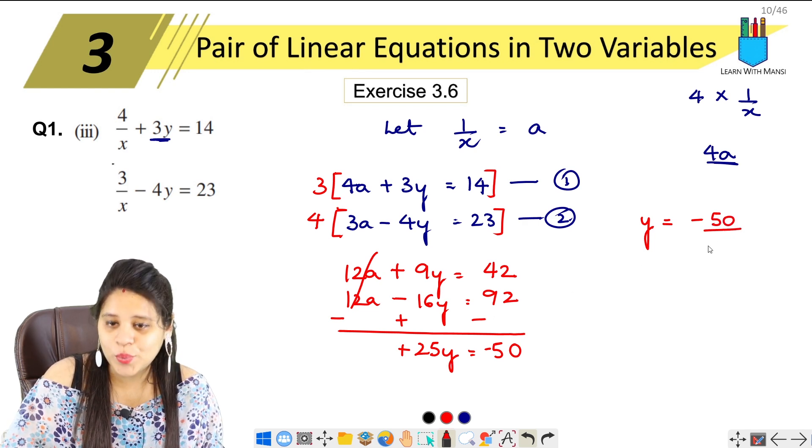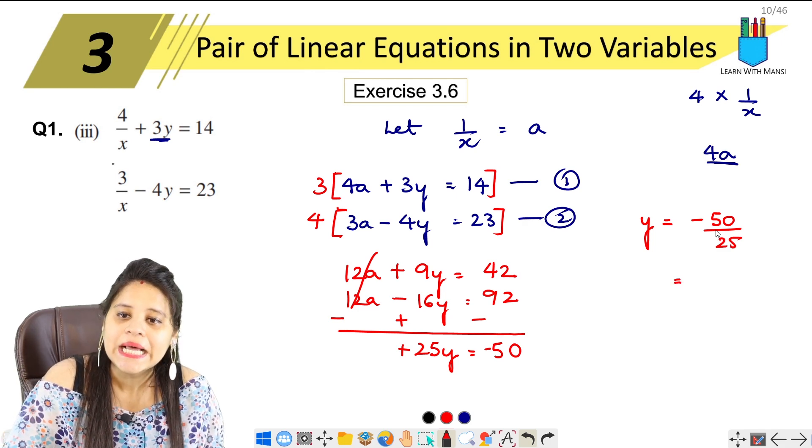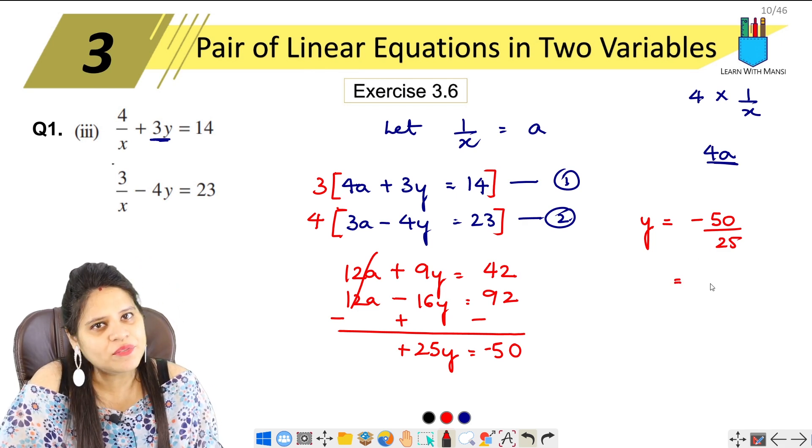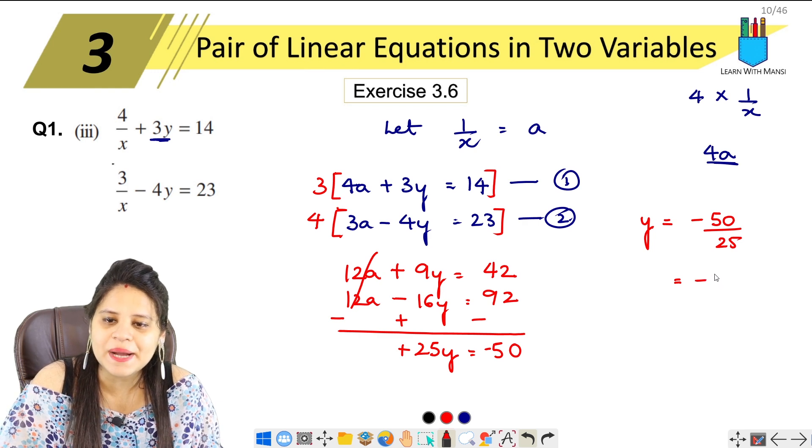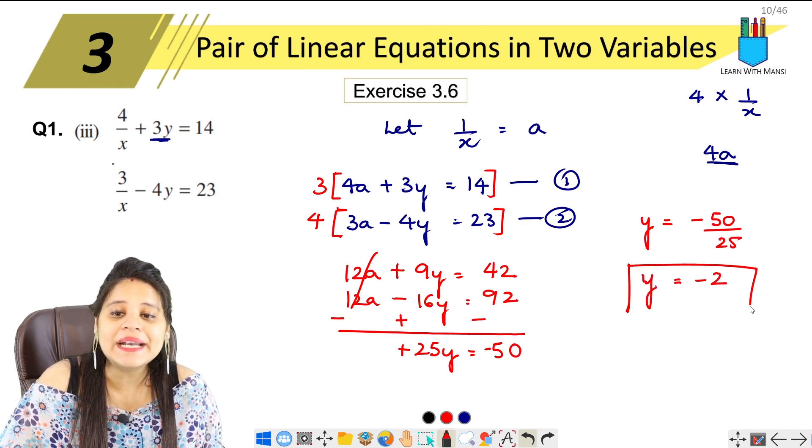That means y equals to minus 50 upon 25. So 25 and 50 cut, 5 divides both. Otherwise, direct 25 to 50.